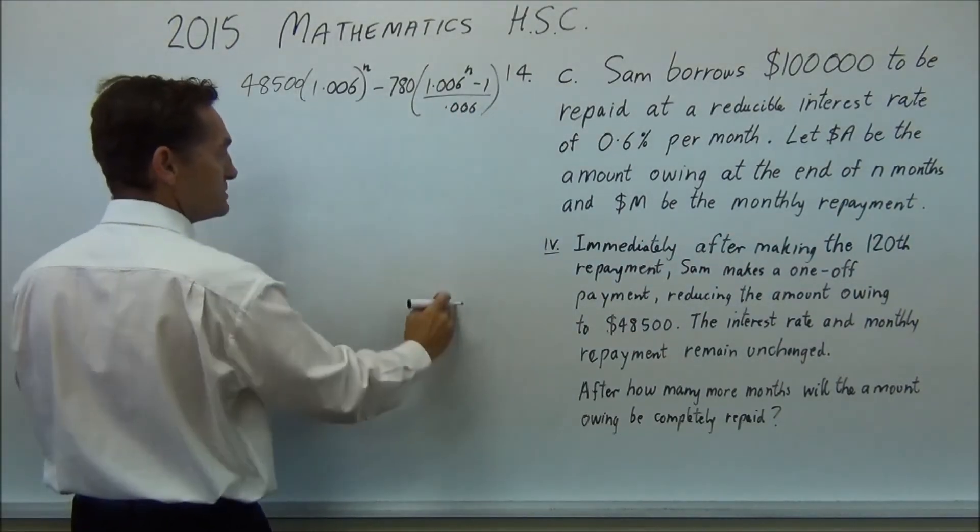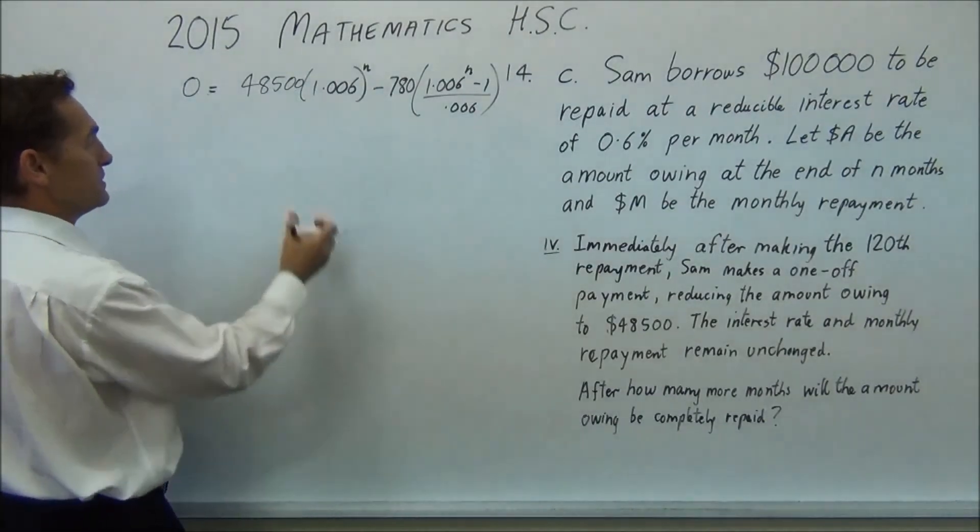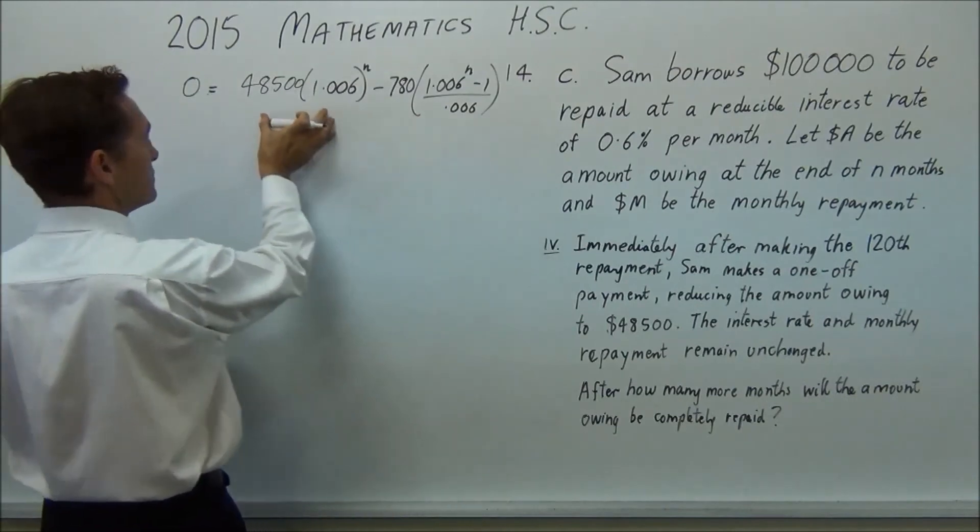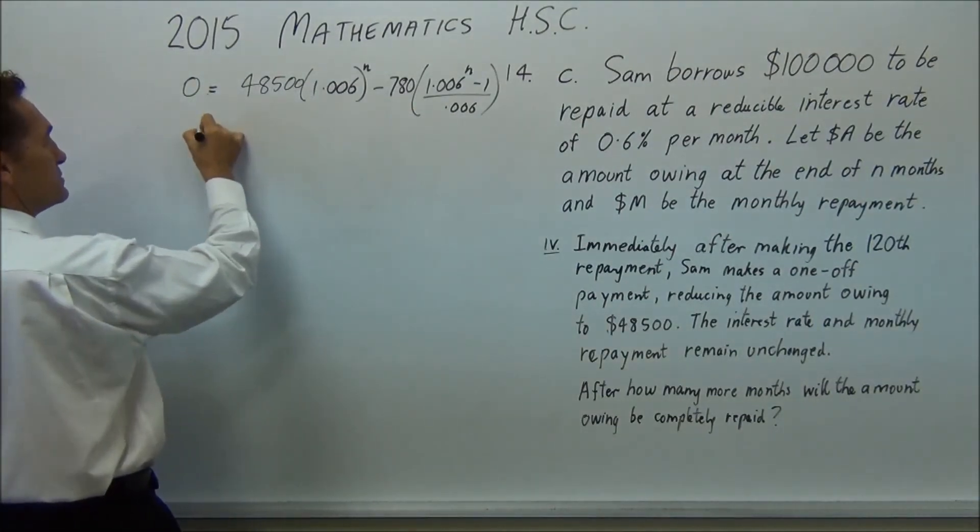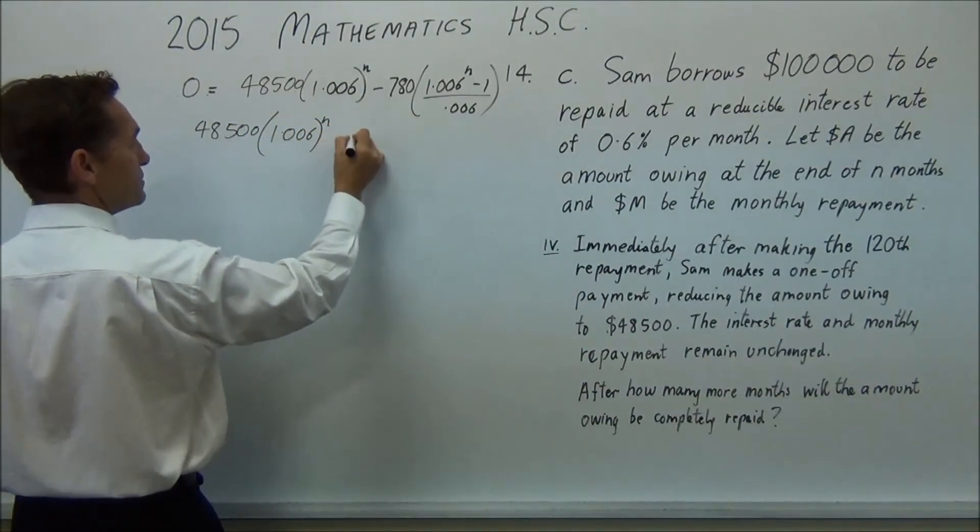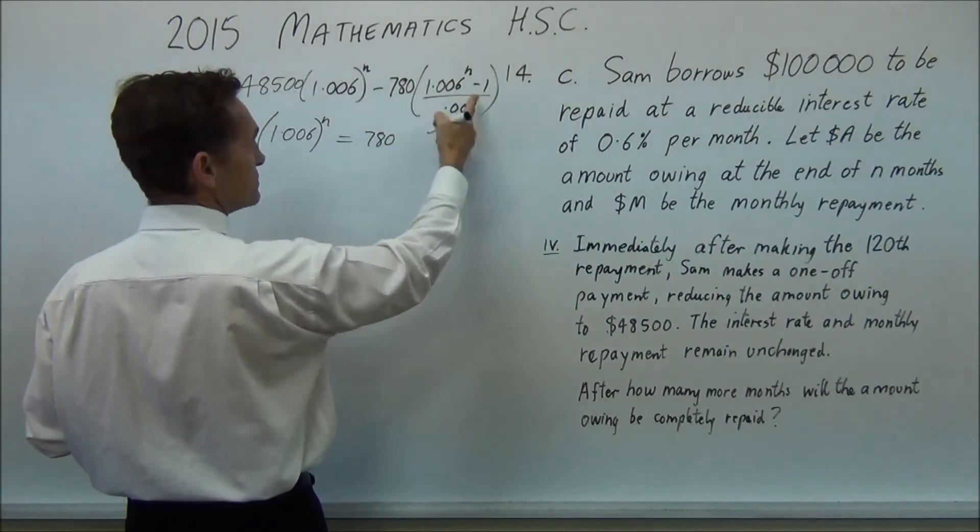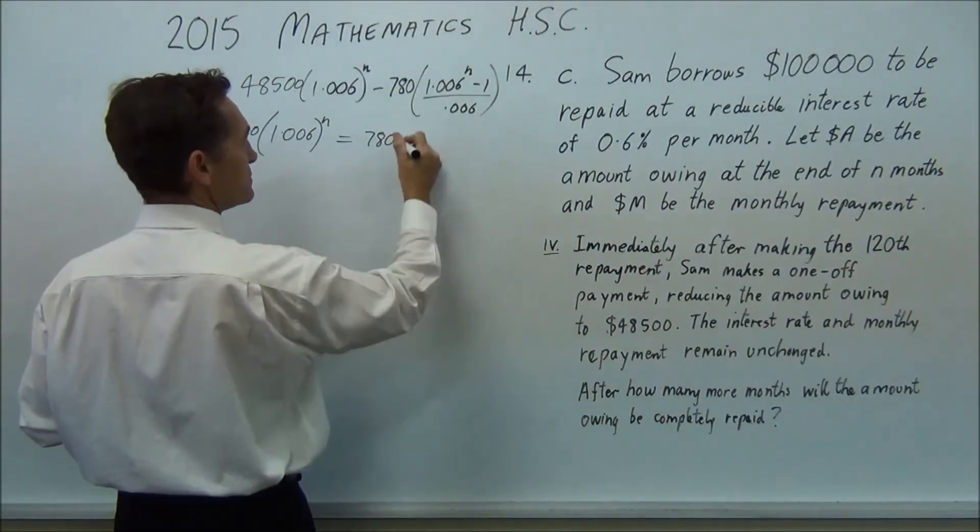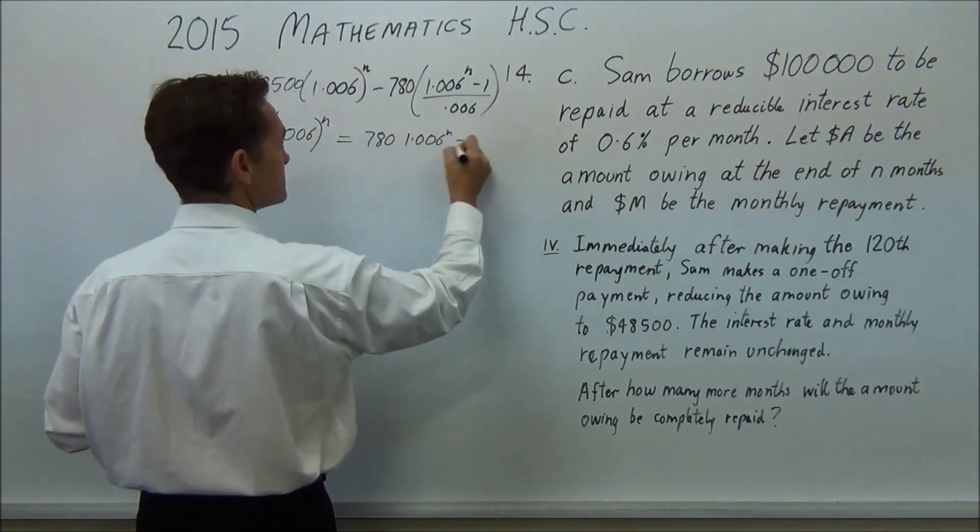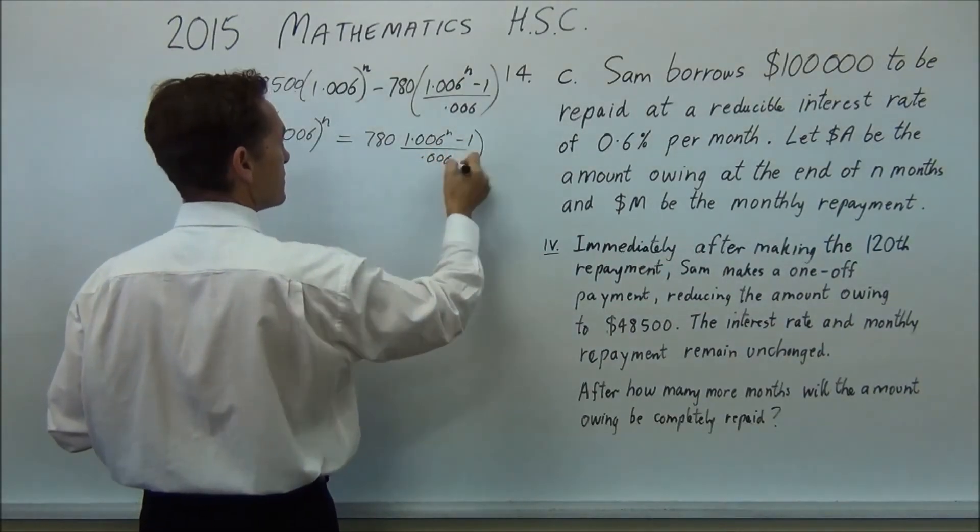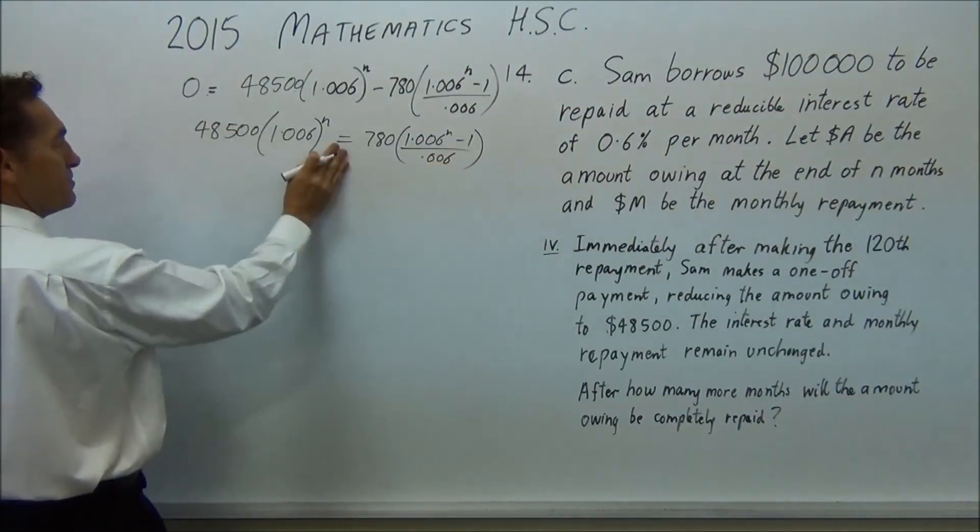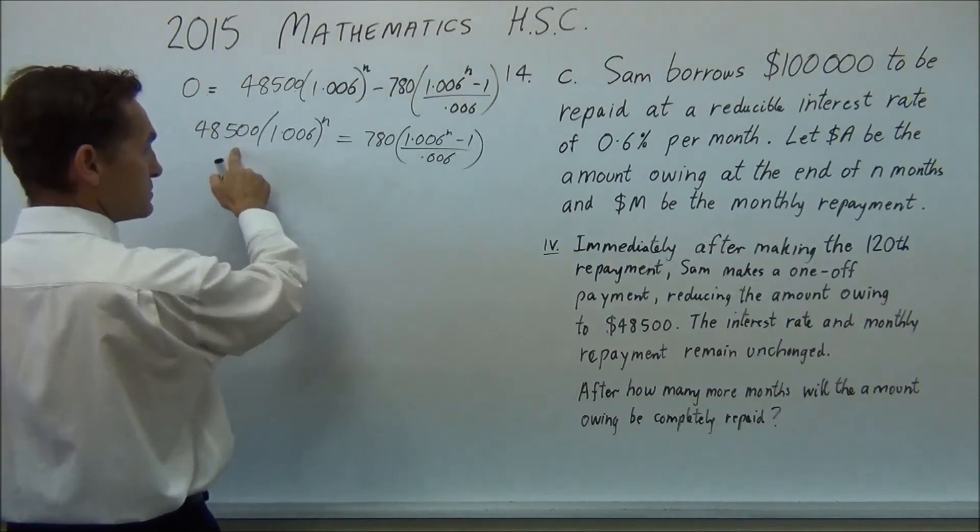from the formula we used in part one, two and three, change that number to $48,500 and go from there. So we want it completely repaid. So this is going to be zero. What you're going to do then is work this down, use your logs and you'll solve it. So you've got this number, subtracted this number, so you can just split those and make this equal to that, to start with. So you'll get 48,500 times 1.006 to the n equals 780. And we should split this up. So you've got 780, 1.006 to the n. We'll split it up after the next line. So now you've got that.